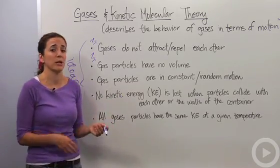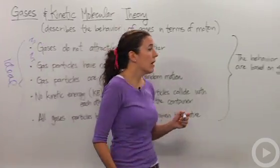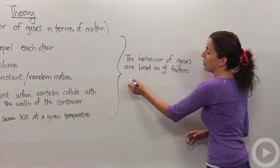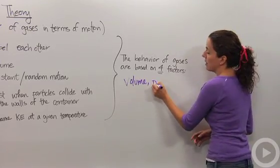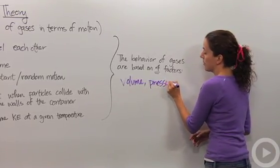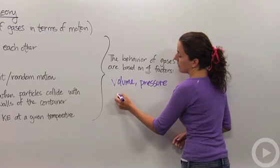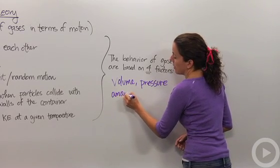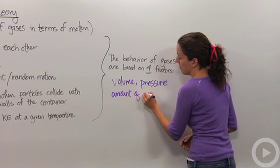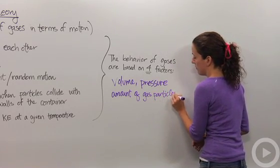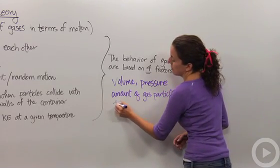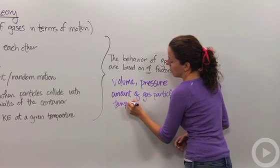So the behavior of gases are based on four main factors: the volume of the container that they're in, the pressure that is on the container within those gas particles, the amount of gas particles that we're talking about, and the temperature.